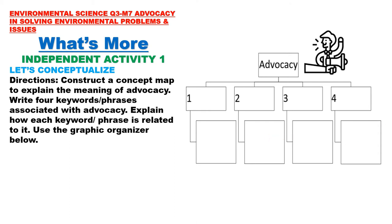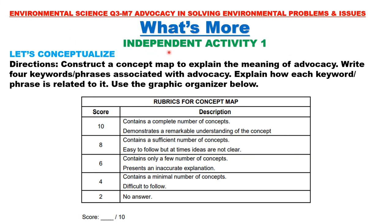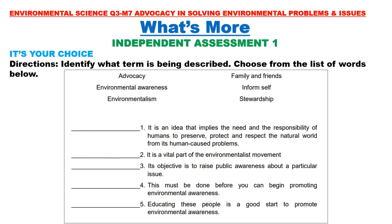Independent Activity 1 will be graded based on the rubrics provided. The perfect score is 10 points. Independent Assessment 1 — It's Your Choice: Identify what term is being described. Choose from the list of words below: advocacy, environmental awareness, environmentalism, family and friends, informed self, and stewardship.